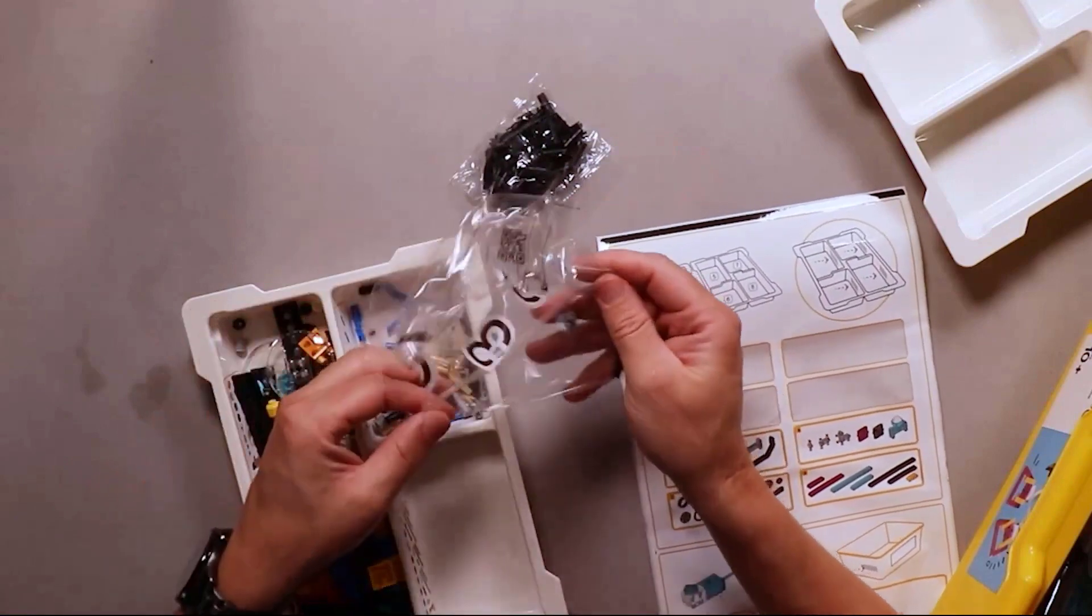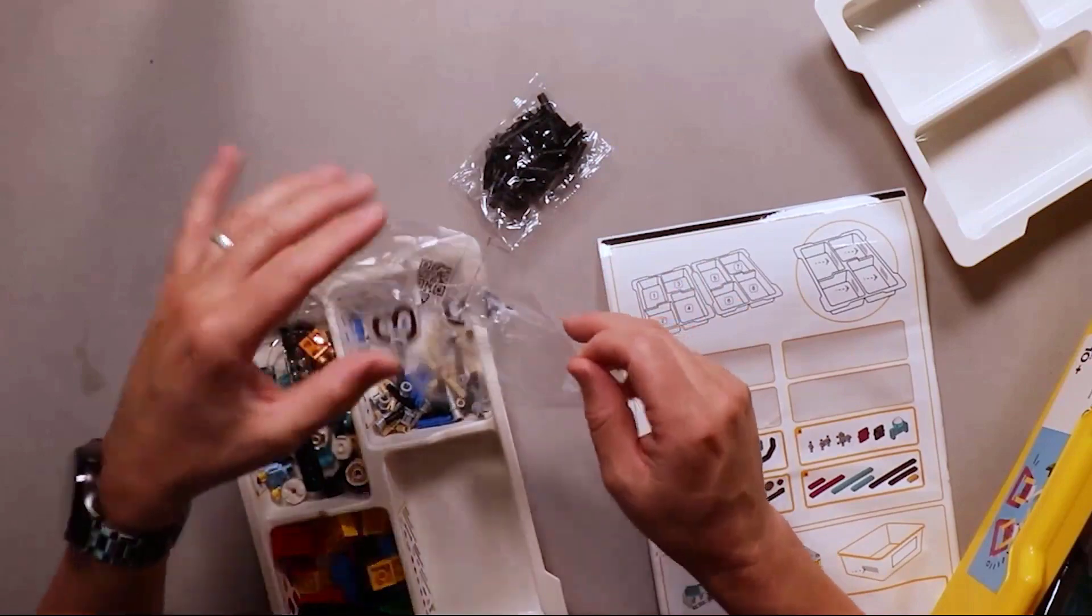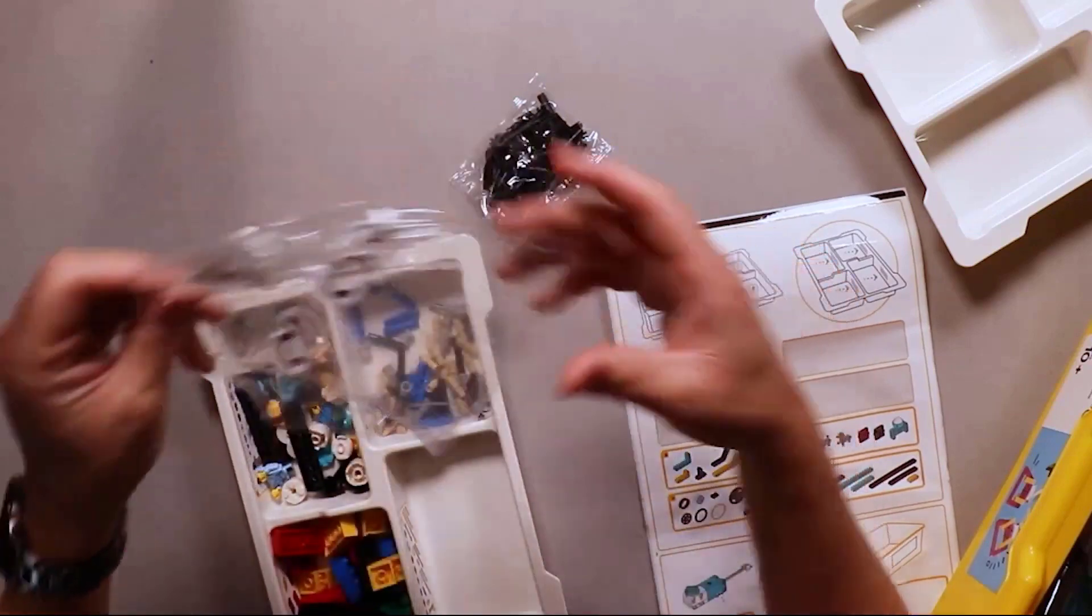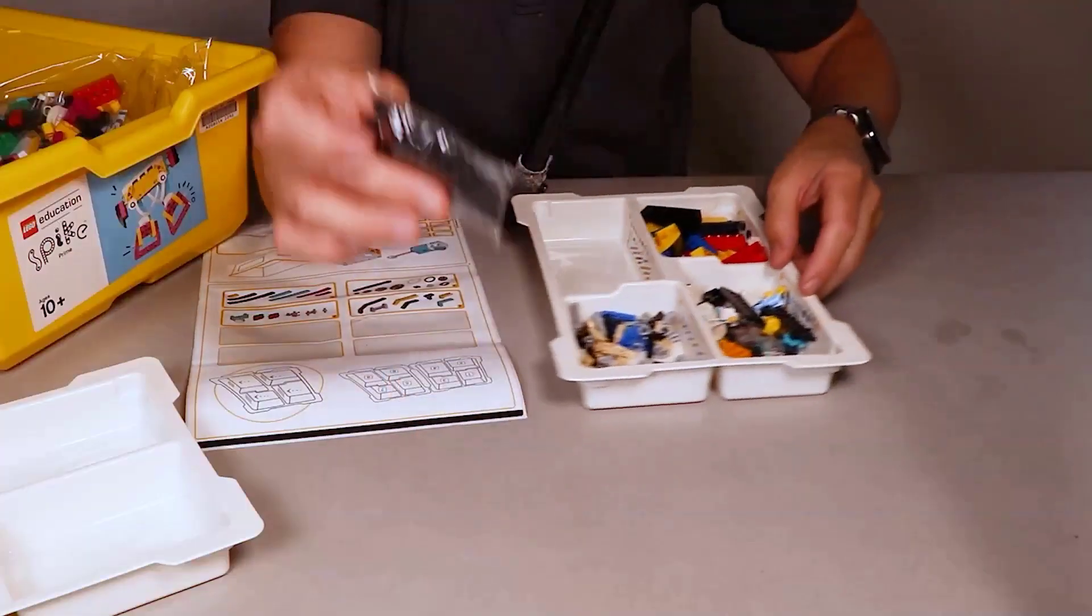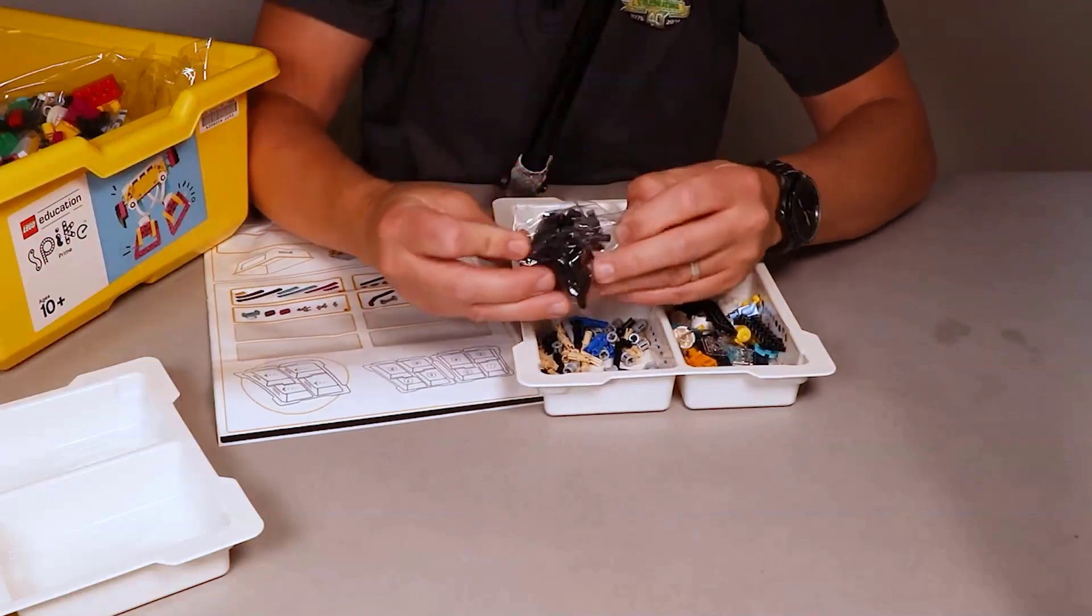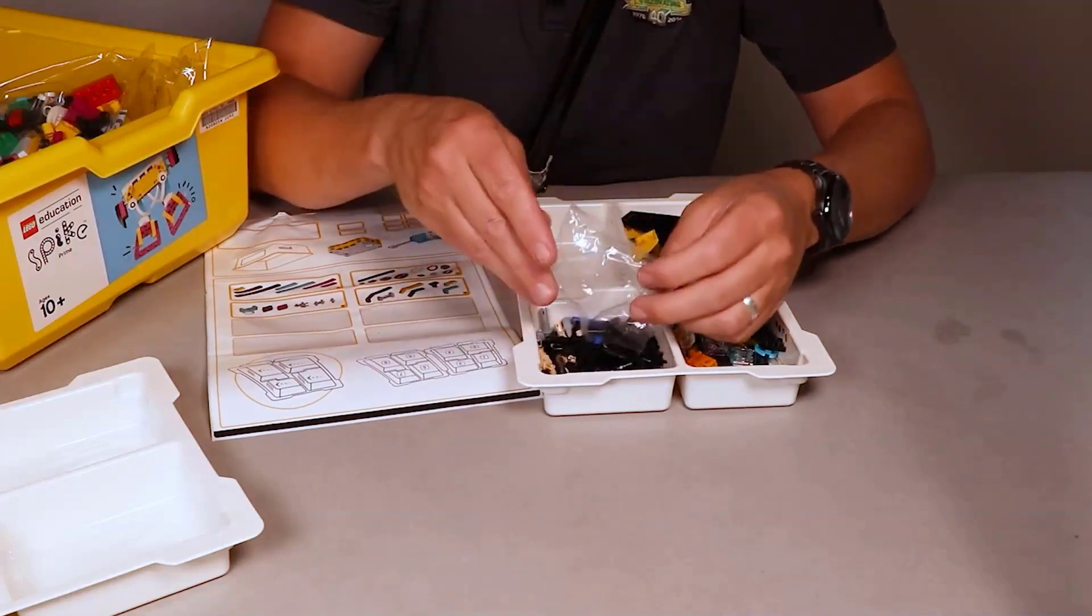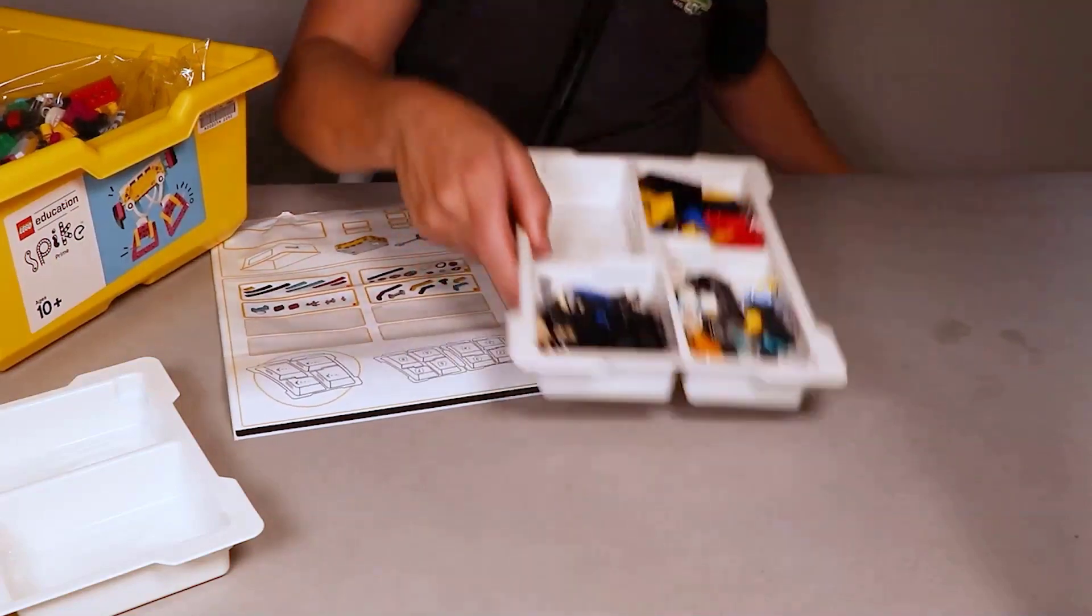There's a small bag full of little black connector pieces. Go ahead and open those up and dump them out, because you will use many of those for all of your builds. There we go, right into the tray.